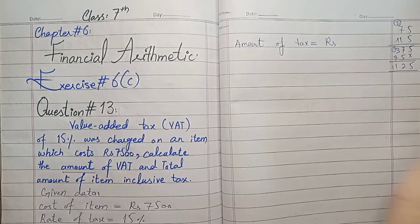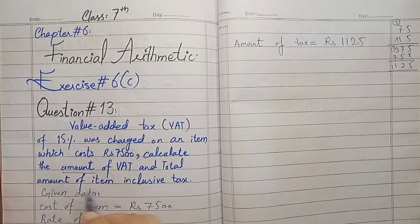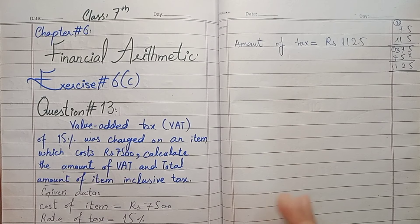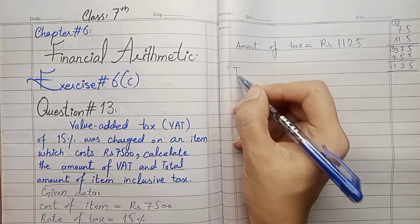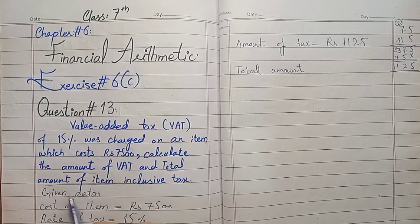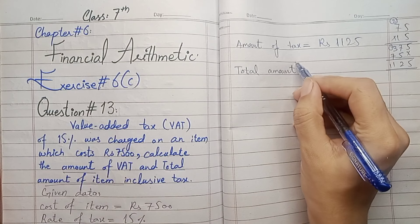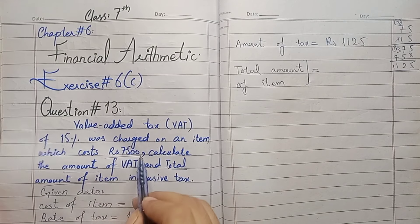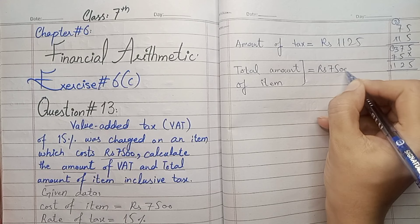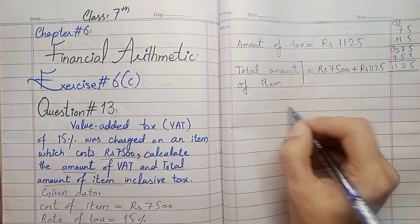Now we have to find the total amount of items inclusive of tax. We can write: total amount equals cost price plus tax amount.